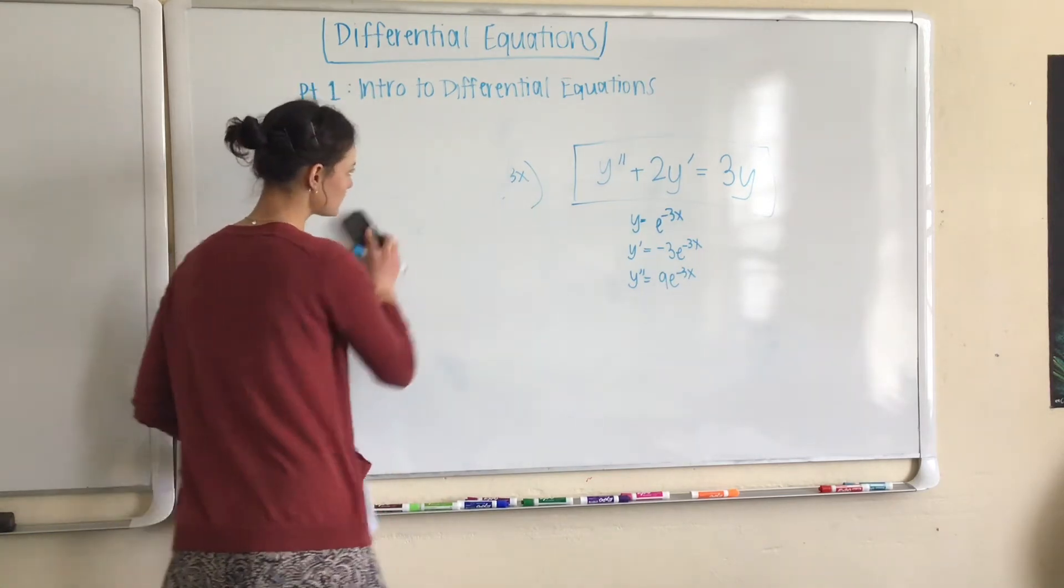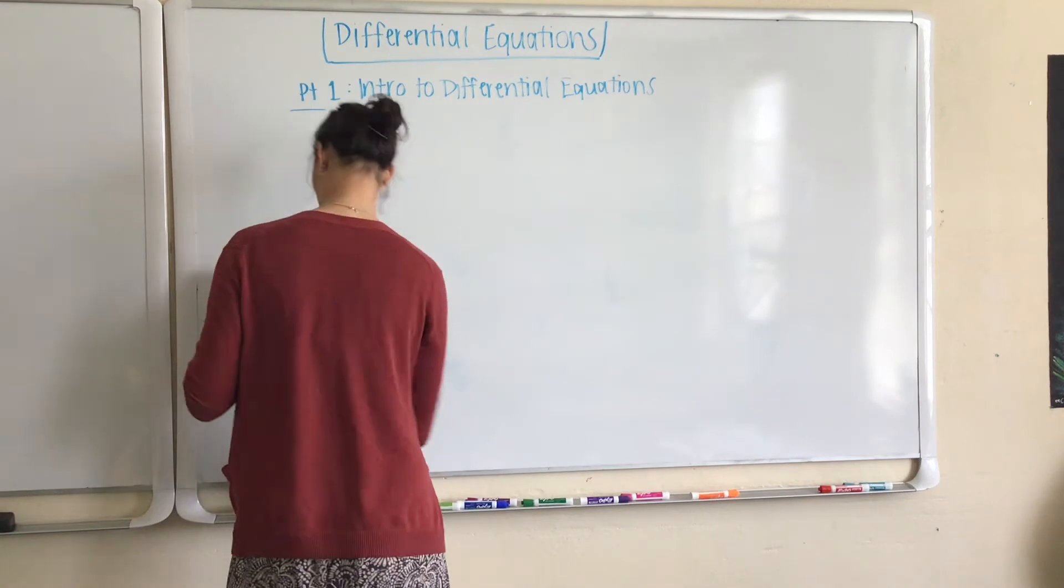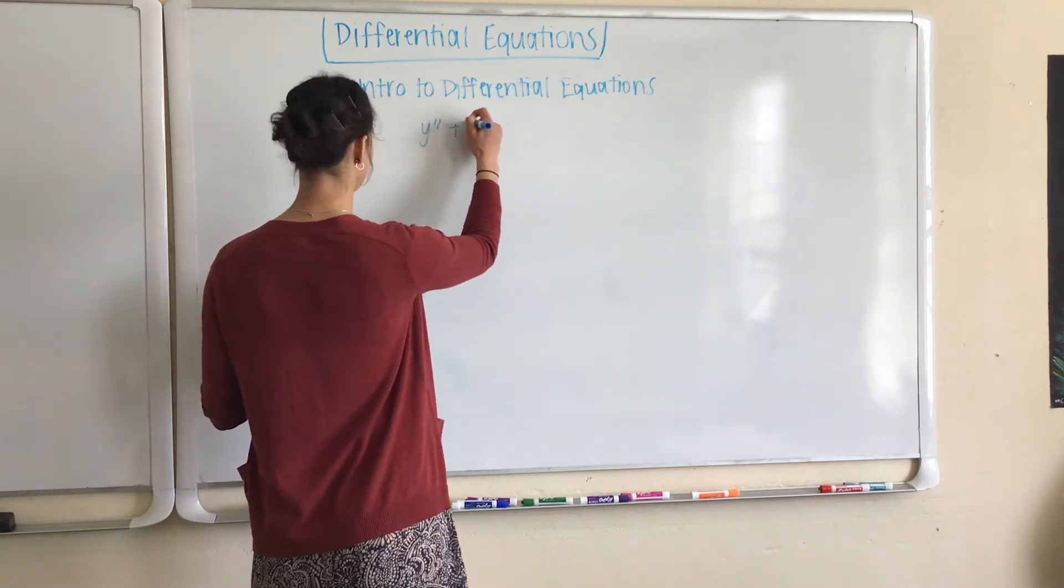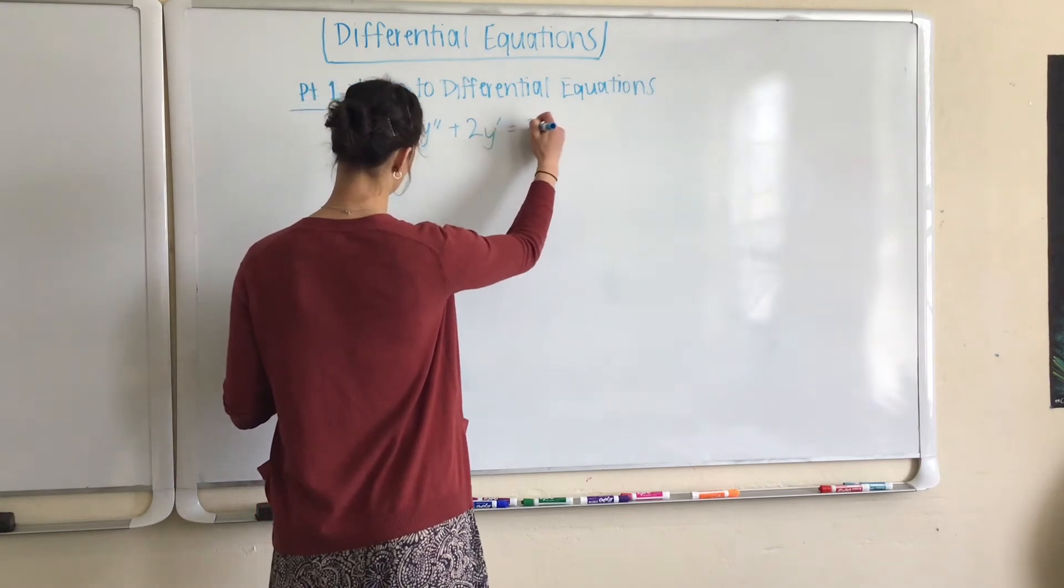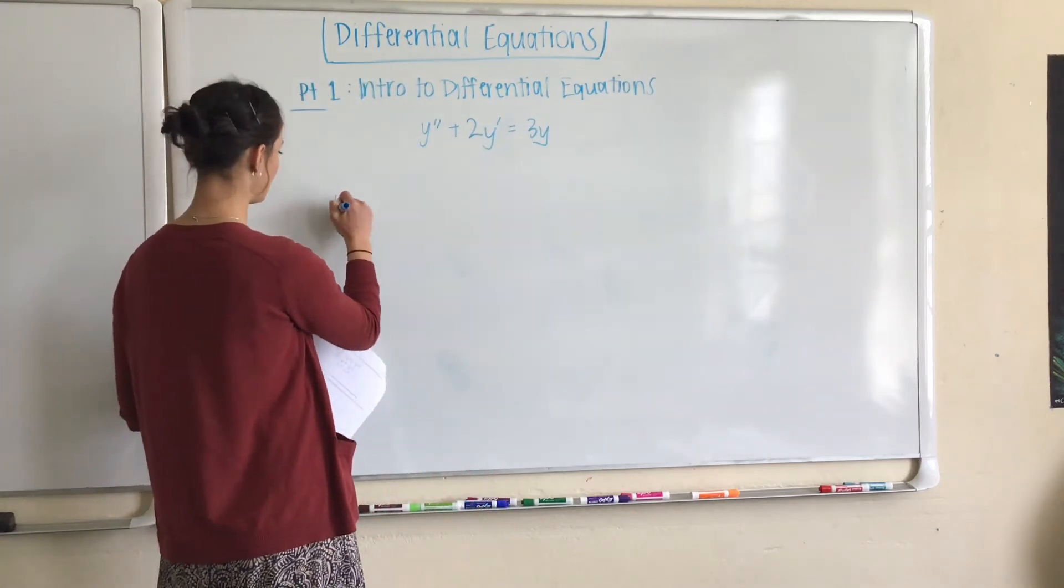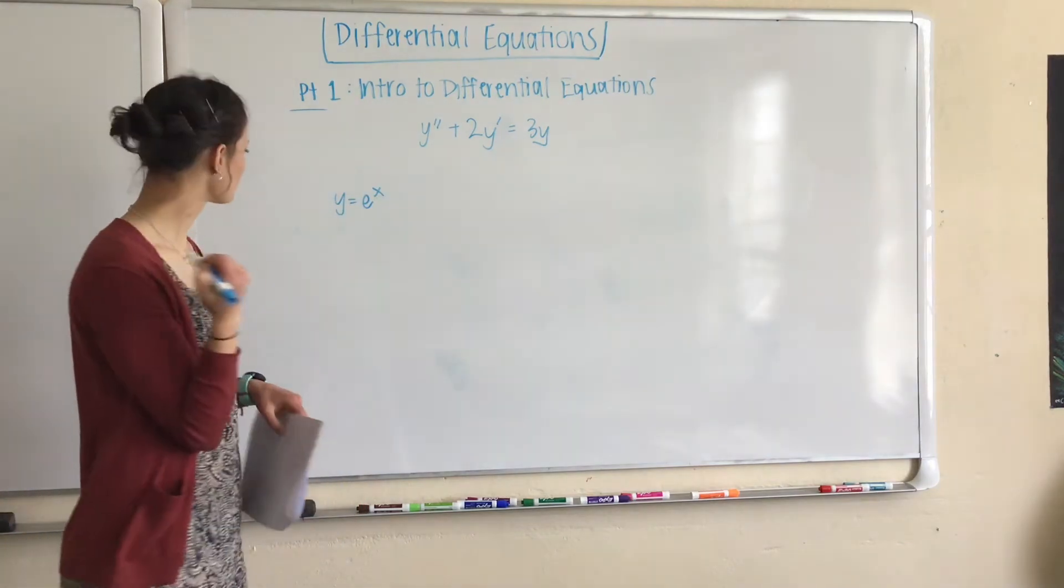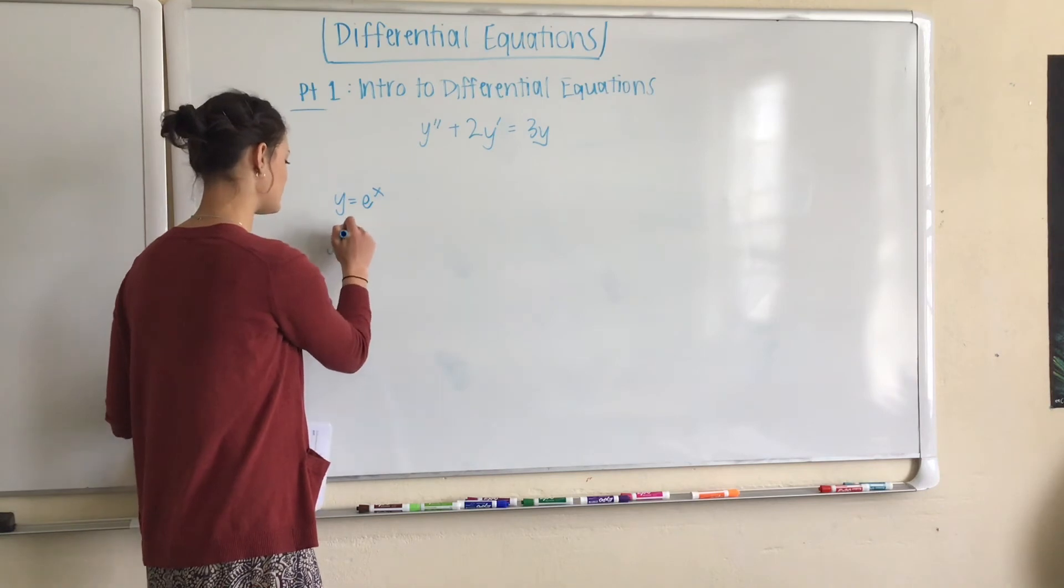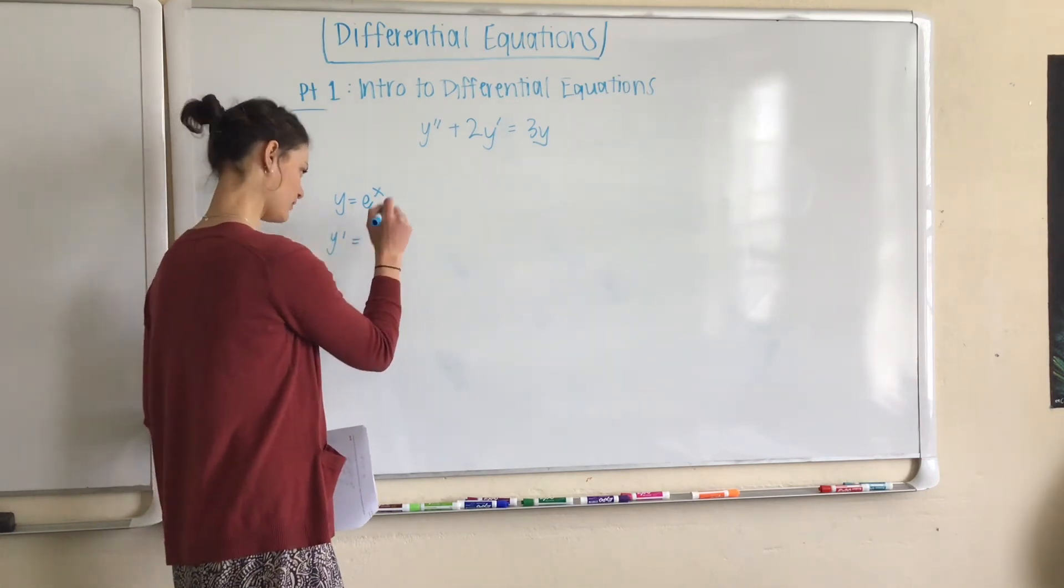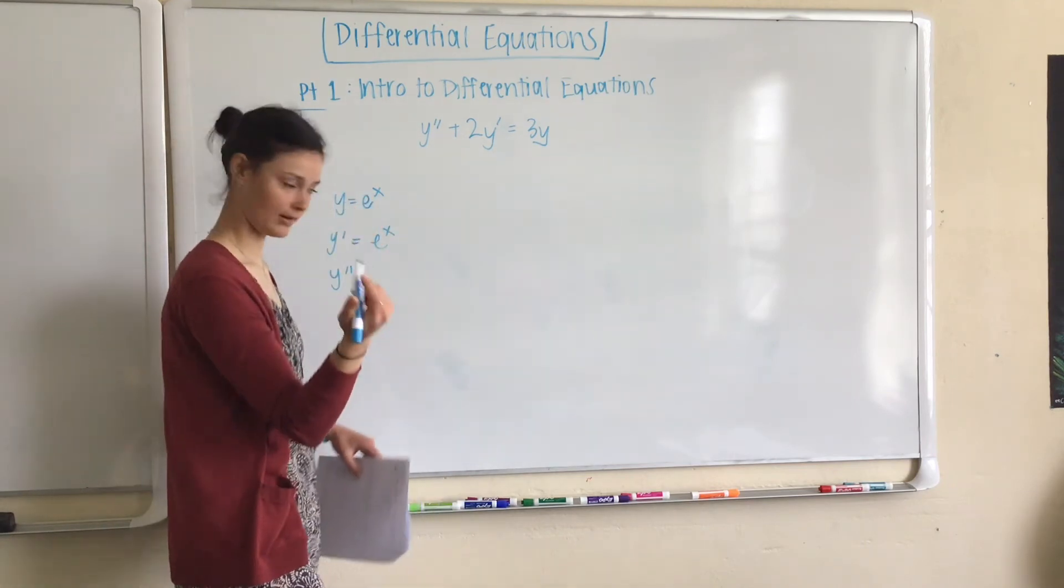I'm going to erase all this. So we, again, still have the same differential equation, y'' + 2y' = 3y. And now try y = e^x. Maybe this is an easier one that I should have started with. Because what is the derivative of e^x? e^x, of course. And what is the second derivative of e^x? Still e^x. So that was a little bit easier.